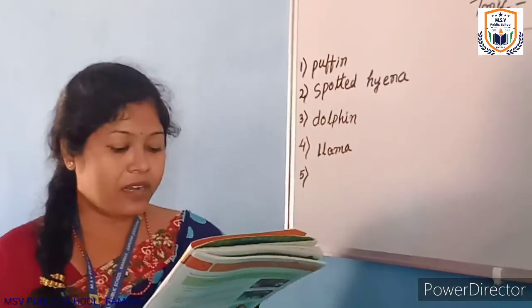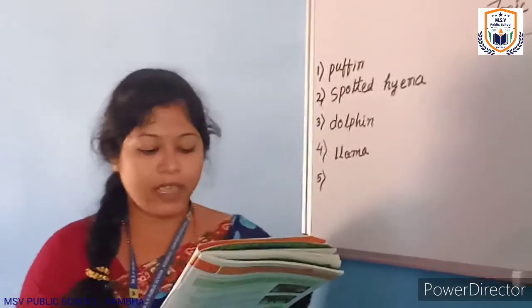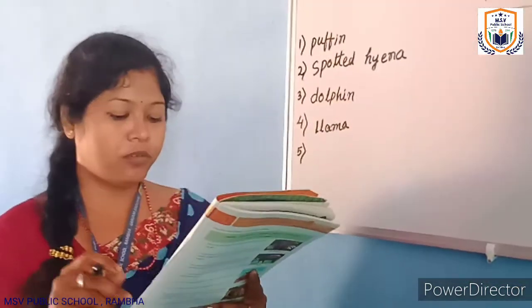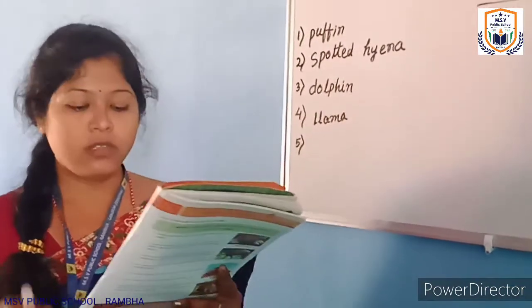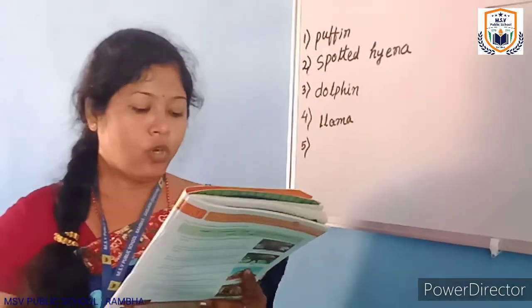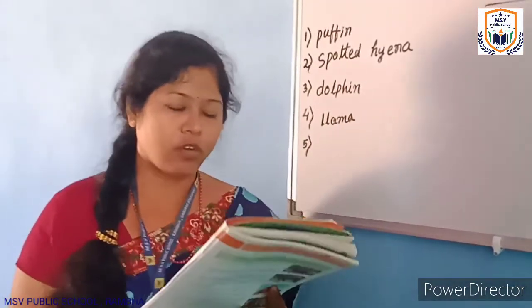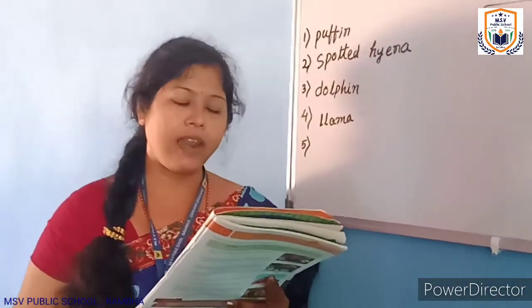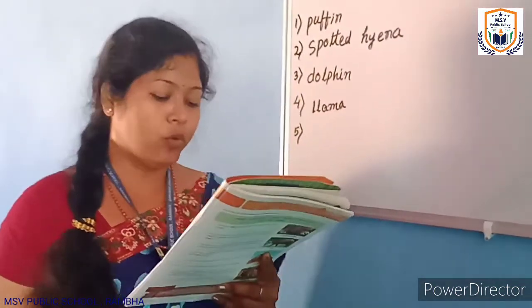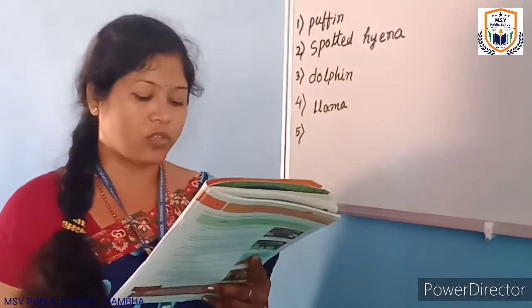Which animal's scientific name is Odobenus rosmarus? Which animal is known in Latin as the tooth-walking seahorse?